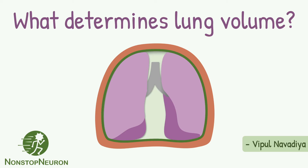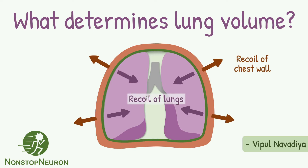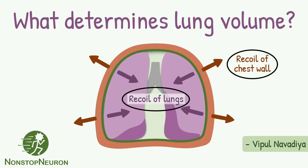Do you know what determines lung volume? The straightforward answer is the balance between elastic recoil of lungs and recoil of chest wall. Don't worry, we will break down every detail. To understand this balance, we will first understand properties of lung and chest wall separately, then we will see how they both interact. Let's get started.